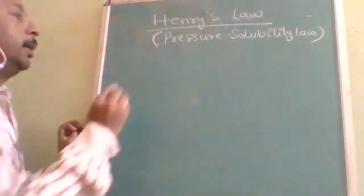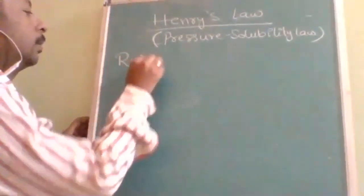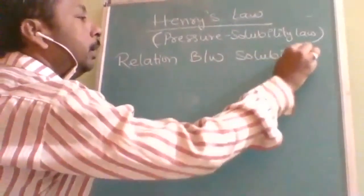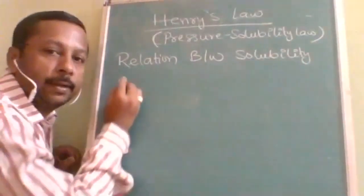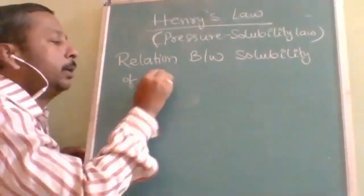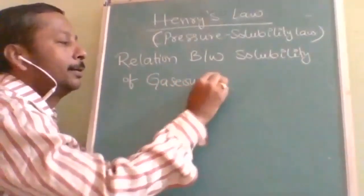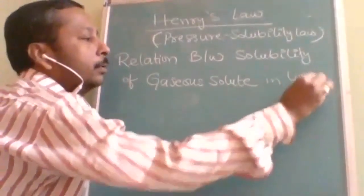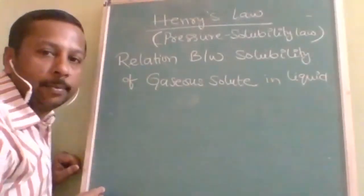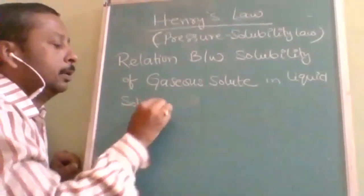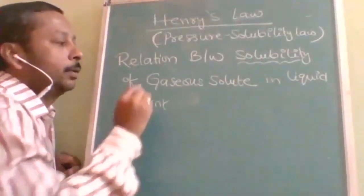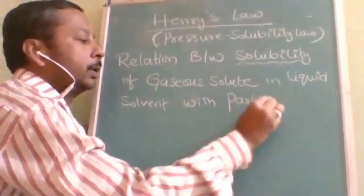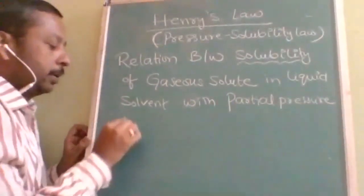Henry's Law gives a relation between solubility — specifically the solubility of only gaseous solute — and the partial pressure of that gas. So basically, Henry's Law is a mathematical relation, and for a relation there should be at least two variables: solubility and partial pressure.